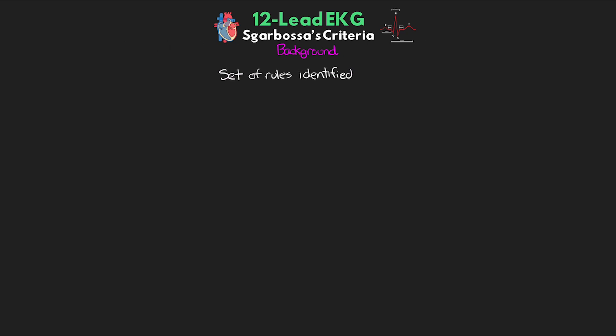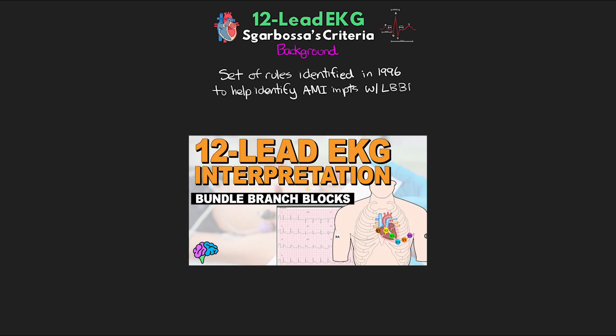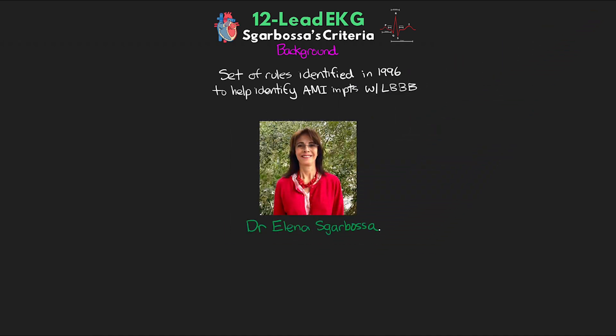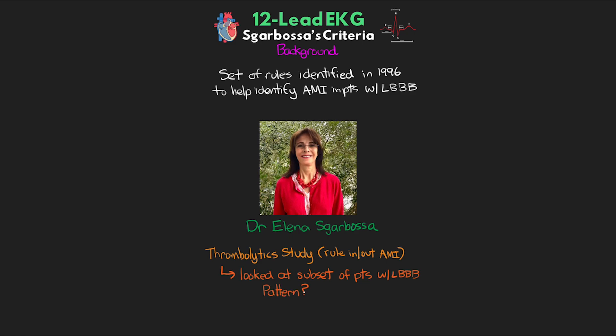Sgarbossa's Criteria is a set of rules identified in 1996 to help identify AMI patients who have a left bundle branch block. Dr. Elena Sgarbossa and her team were looking at data from a famous study on the use of thrombolytics to help rule in or rule out patients for AMI. They examined a subset of patients who had a left bundle branch block and tried to find a pattern in those who were ruled in for AMI versus those who were ruled out. They found a pattern and created a set of rules that were a game changer for identifying AMI in these patients.